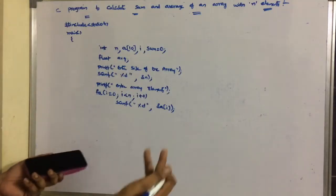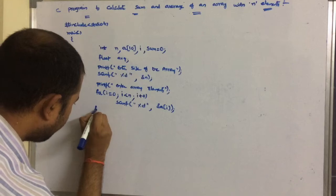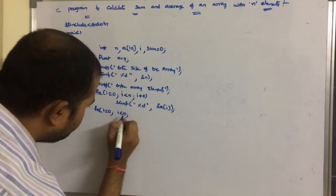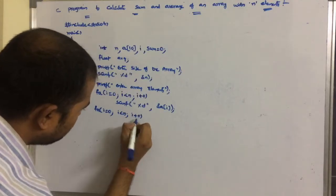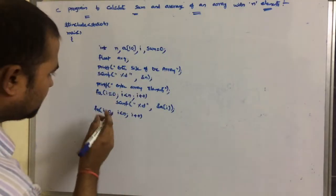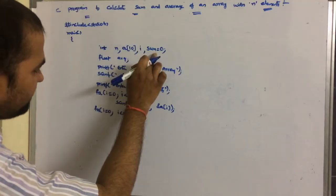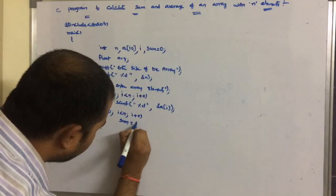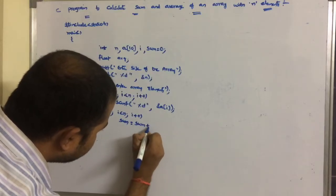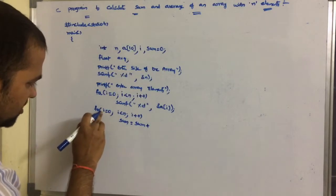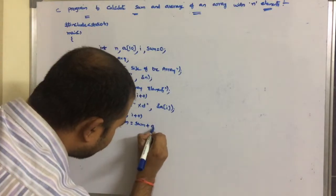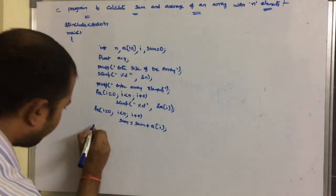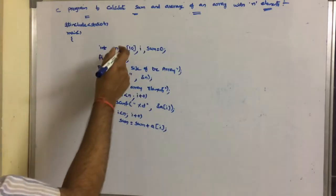Next, we calculate the sum. We use another for loop: for(i = 0; i < n; i++). Inside the loop the statement is: sum = sum + a[i]. This adds each array element to the running sum.